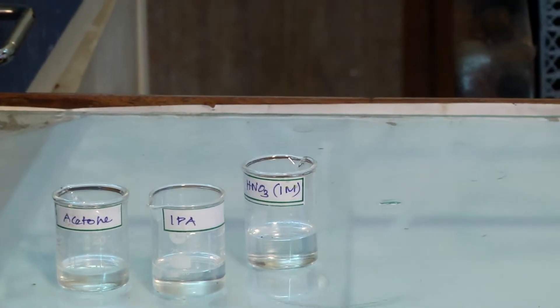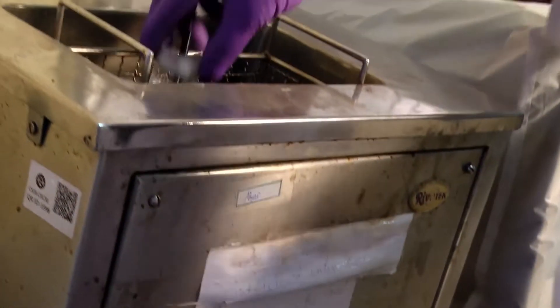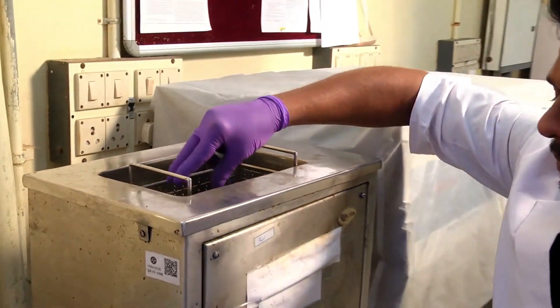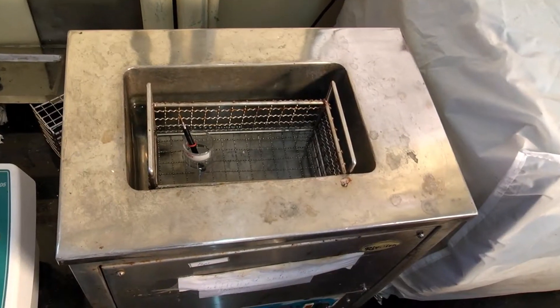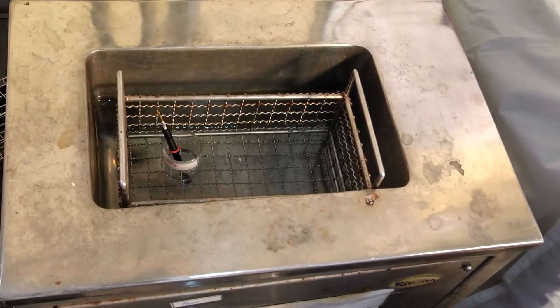After polishing, the alumina slurry was removed by ultrasonication either in isopropanol or ethanol and then in water for at least 3 minutes each.